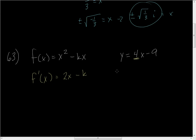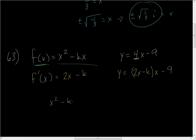Now, talking about the tangent — it's touching in one spot. At that point, the coordinates are the same, which means the y-coordinates are the same. The y-coordinate from the function is x squared minus kx, and the y-coordinate from the tangent line is 4x minus 9. Those have to be equal. Distributing x, we get 2x squared minus kx minus 9.